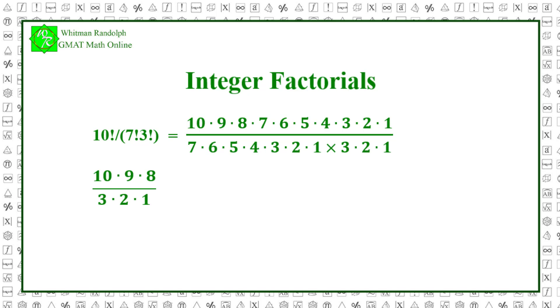Canceling the 3 in the denominator with the 9 in the numerator leaves 3 in the numerator, and canceling the 2 in the denominator with the 8 in the numerator leaves 4 in the numerator. So we now have 10 times 3 times 4 which equals 120.